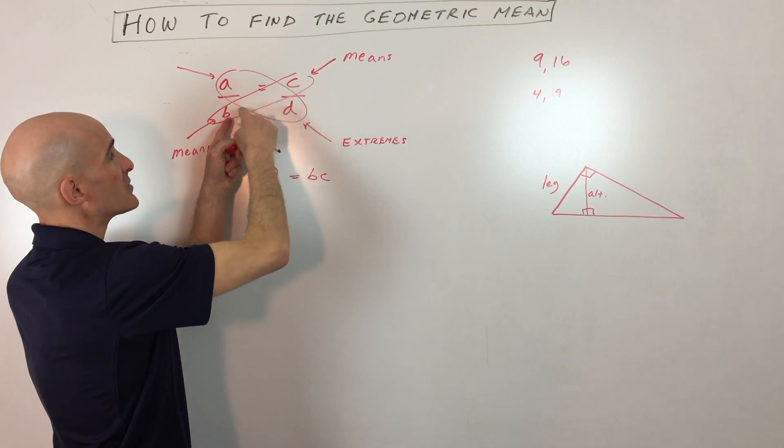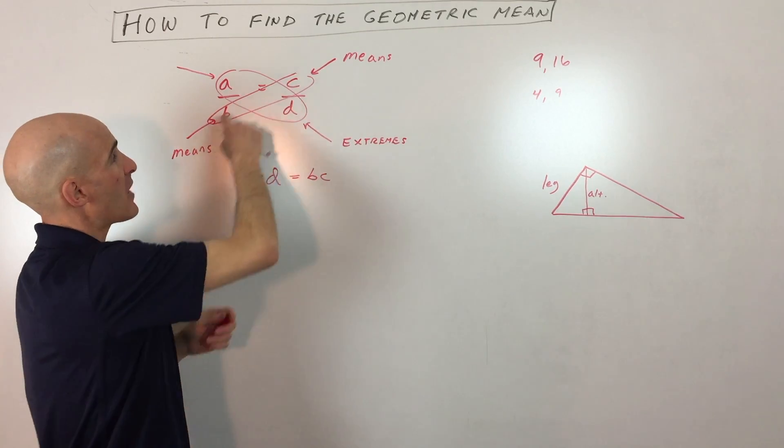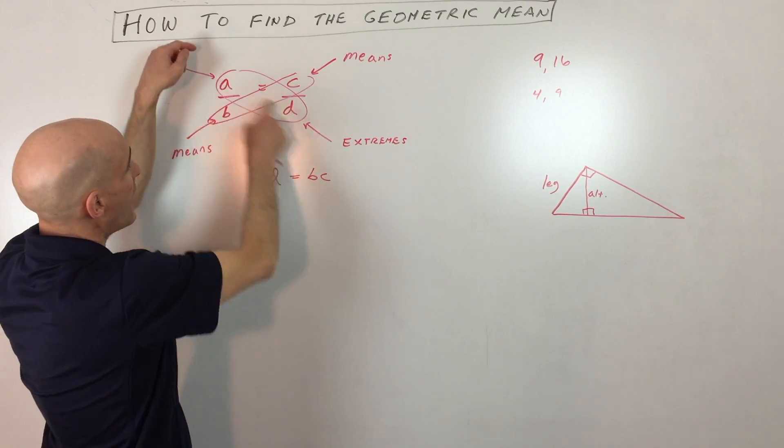Which are these ones here—I guess you could think of them as being in the middle, right? B and C. So the means—the product of the means is equal to the product of the extremes. Those are the ones here on the outside.